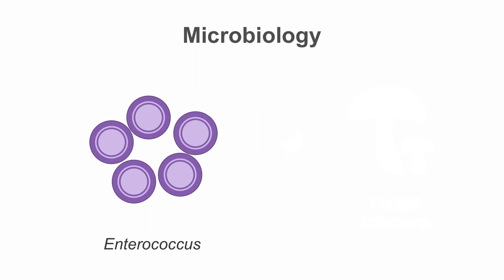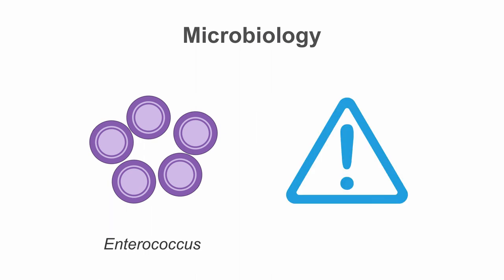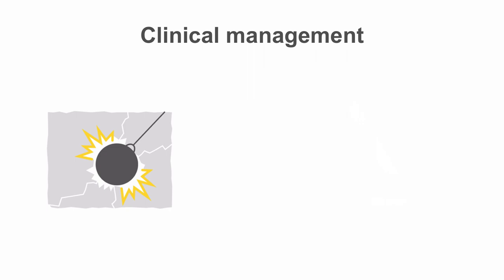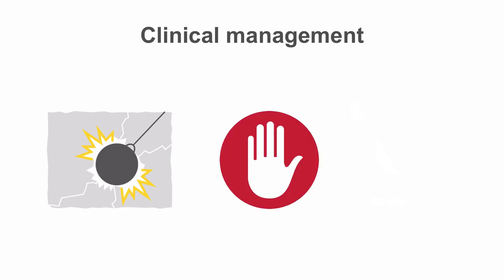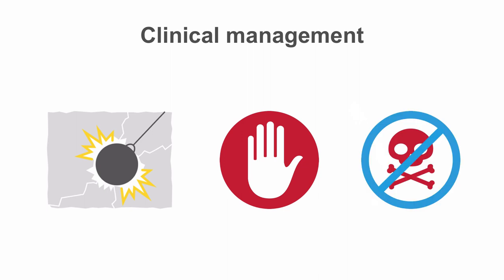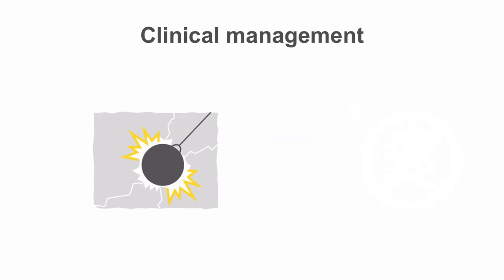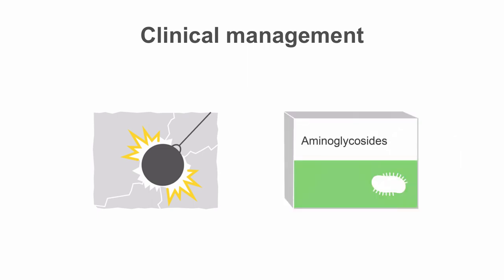Enterococcus causes about 10% of infective endocarditis. It is a notorious problem because agents that interfere with the organism's cell wall can inhibit these organisms but cannot kill them. However, bactericidal therapy is essential to prevent recurrence of endocarditis of any cause. Thus, for enterococcal endocarditis, potentially toxic aminoglycosides must be added to cell wall agents for the entire period of treatment to eradicate the infection.